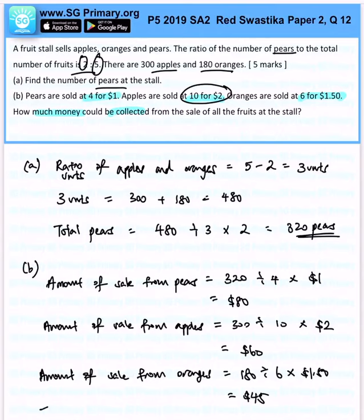All in all, total sales will be $80 plus $60 plus $45. The final answer is $185. That is the answer for this question.